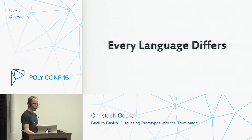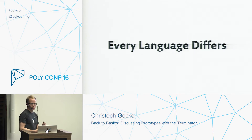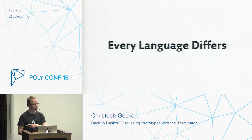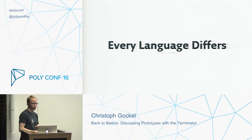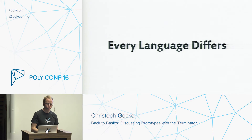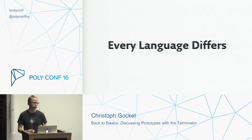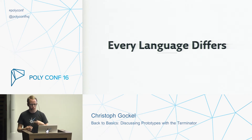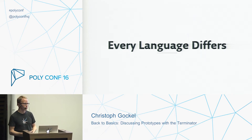Every language differs in one way or another. The term class doesn't necessarily mean the same thing across languages. In Ruby, for example, you can use a class and pass it around as a value as well. In Java, you can kind of do that — you have the .class attribute. In C++, you don't have that chance at all.